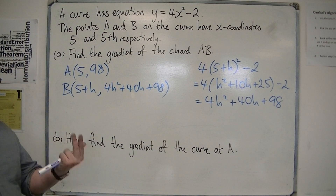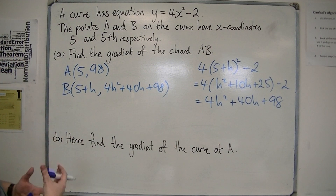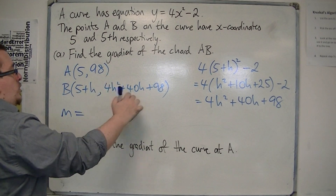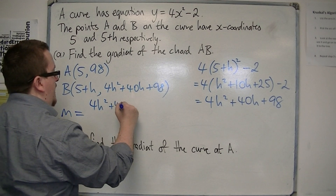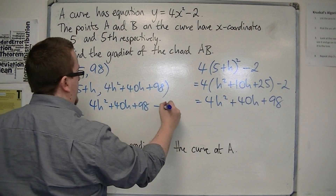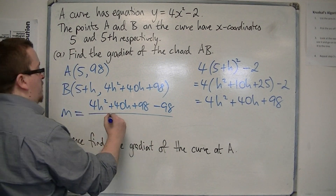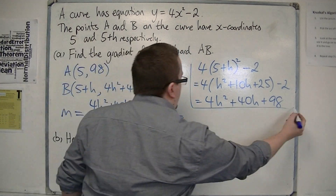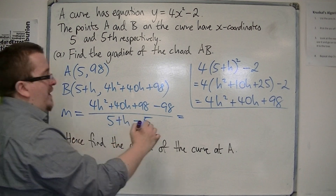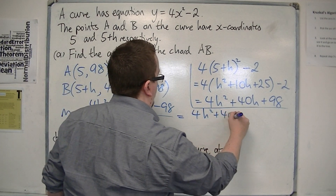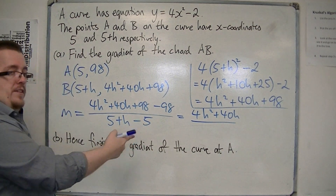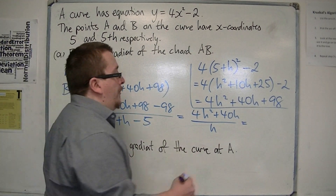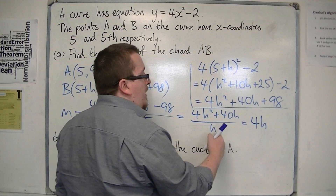So then, because I've now got the coordinates of A and B, I can find the gradient of the chord AB. m equals the difference in the y-coordinates: so 4h squared plus 40h plus 98, take away 98, over 5 plus h, take away 5. So that leaves me 4h squared plus 40h on the top and just h in the denominator. If I simplify that, 4h squared divided by h is just 4h, and 40h divided by h is 40.